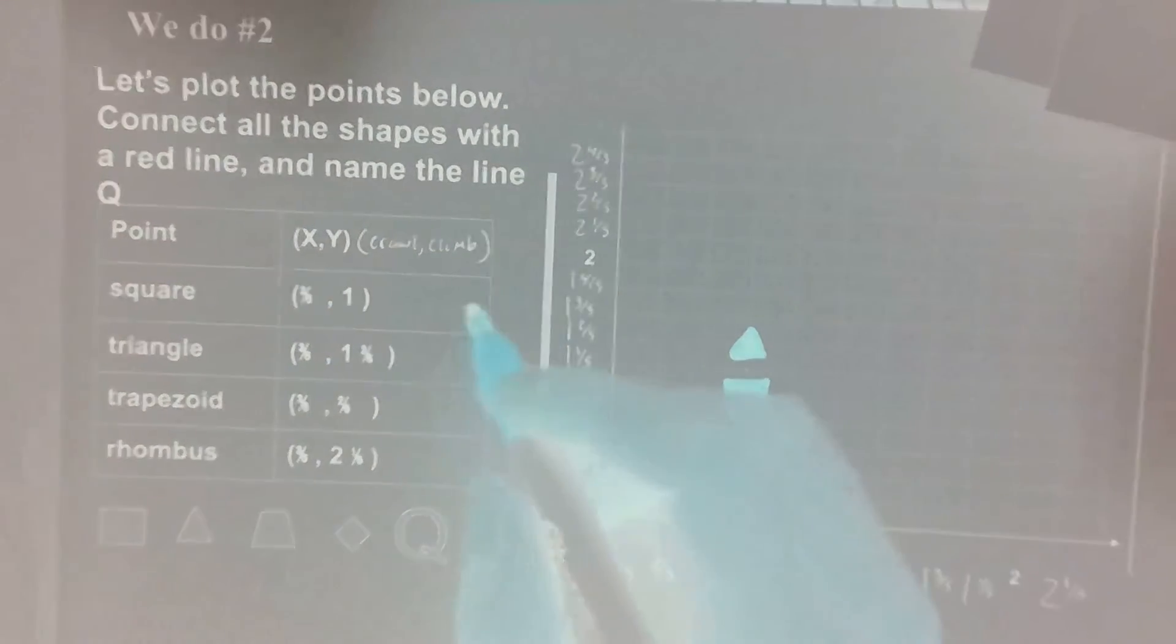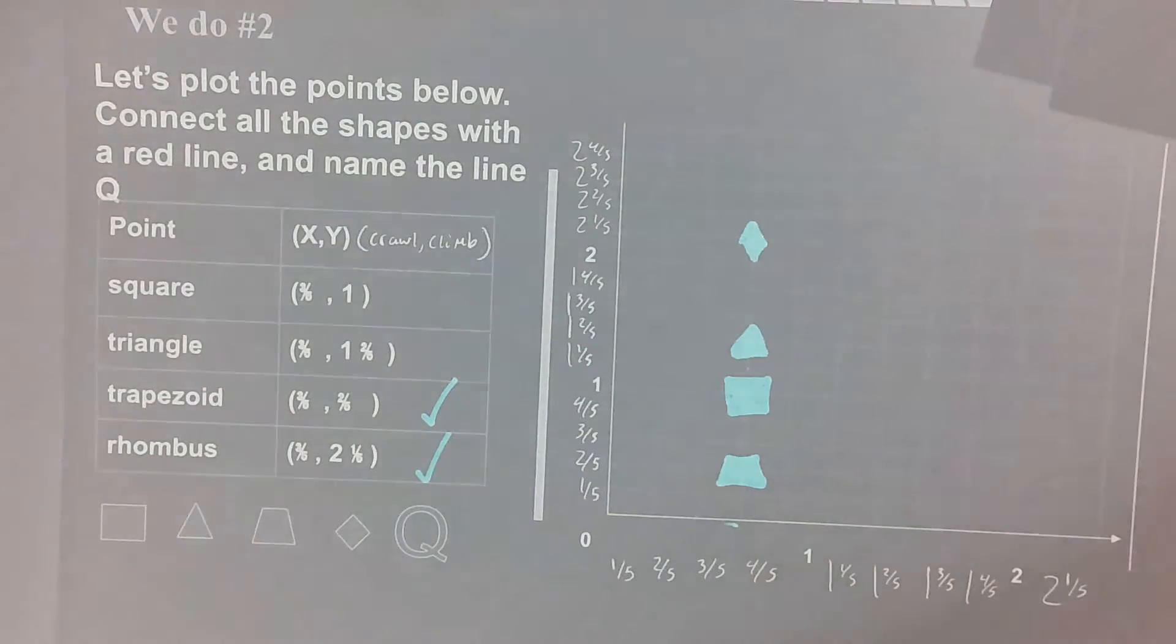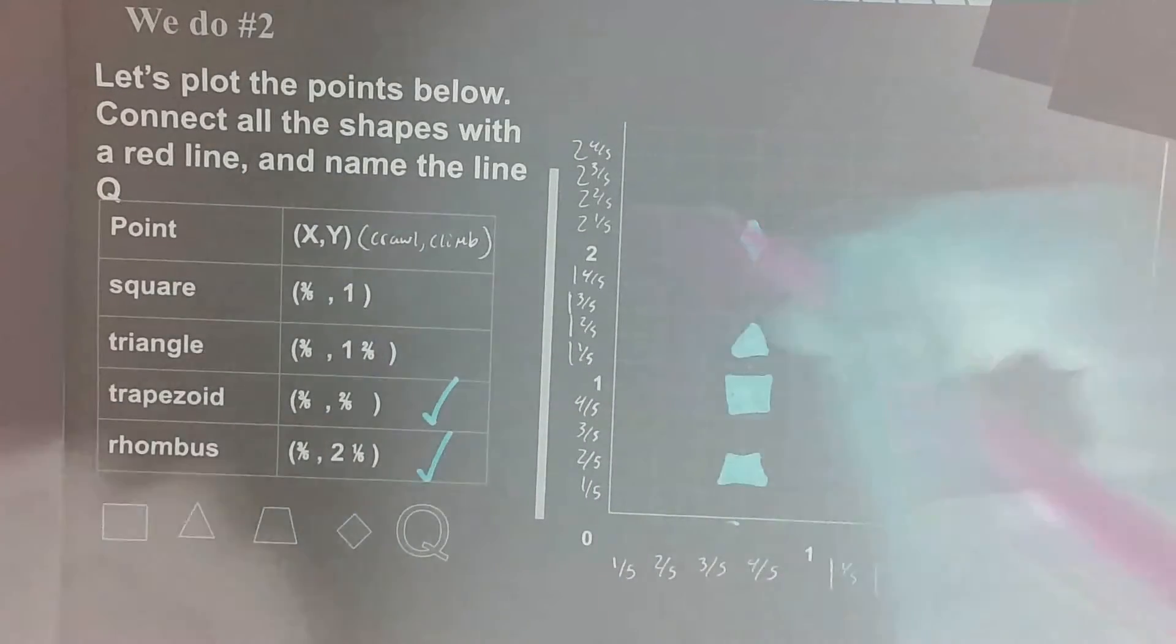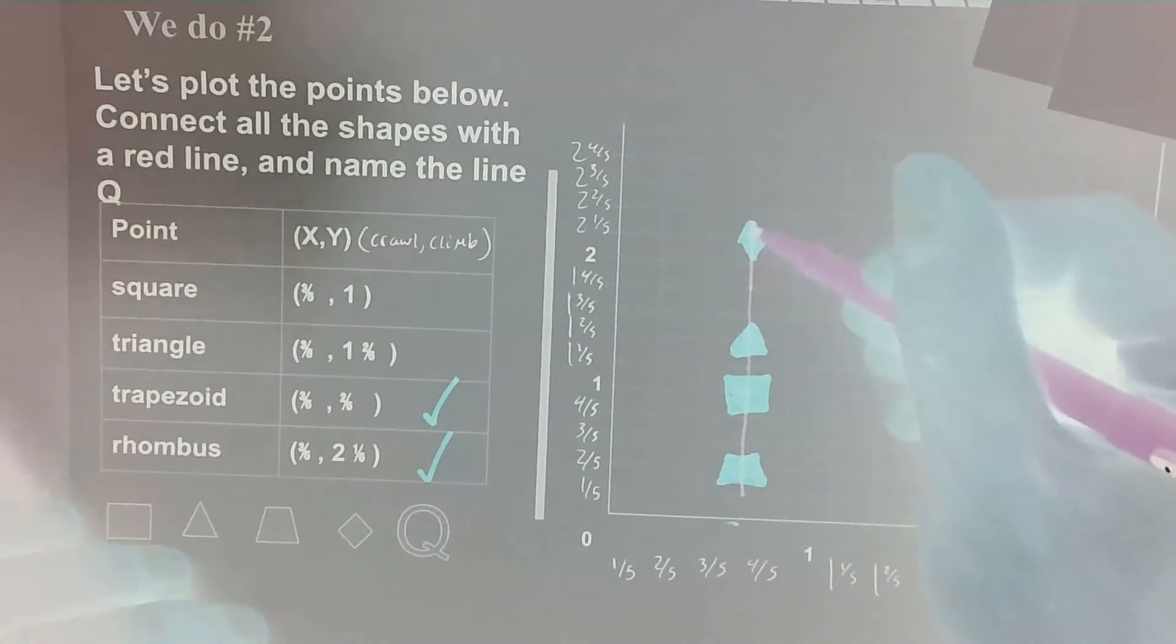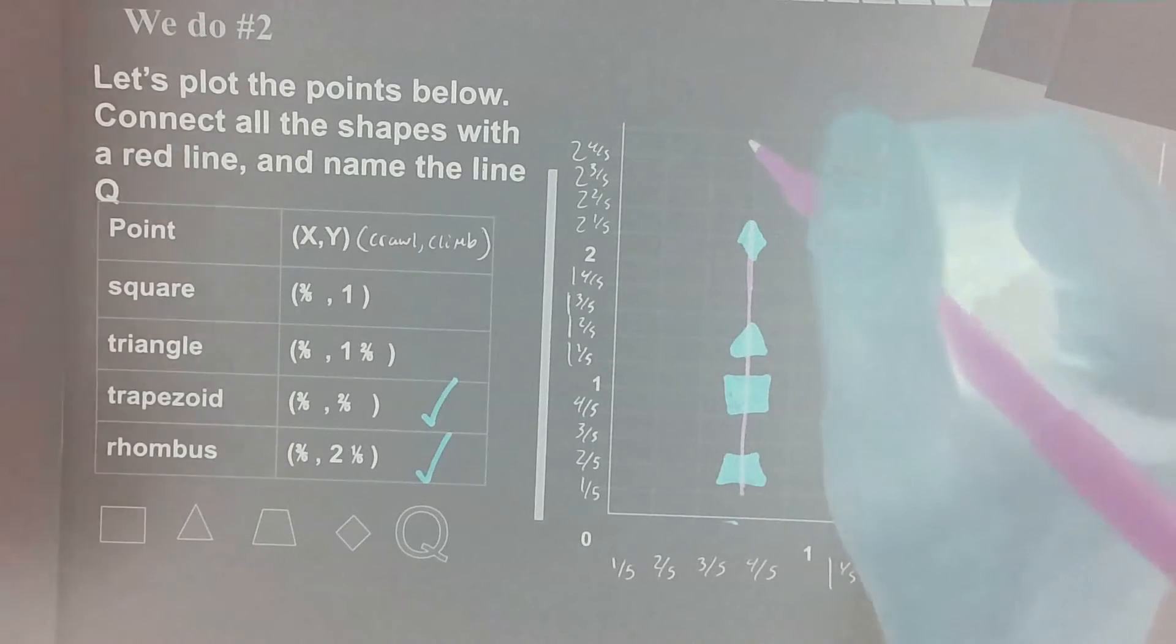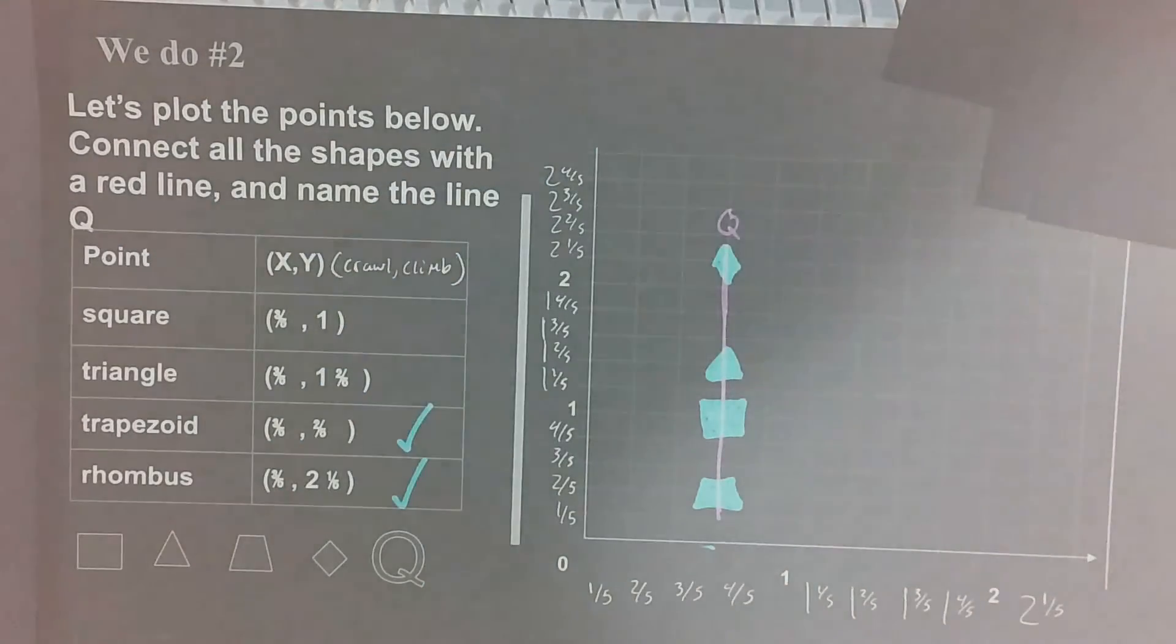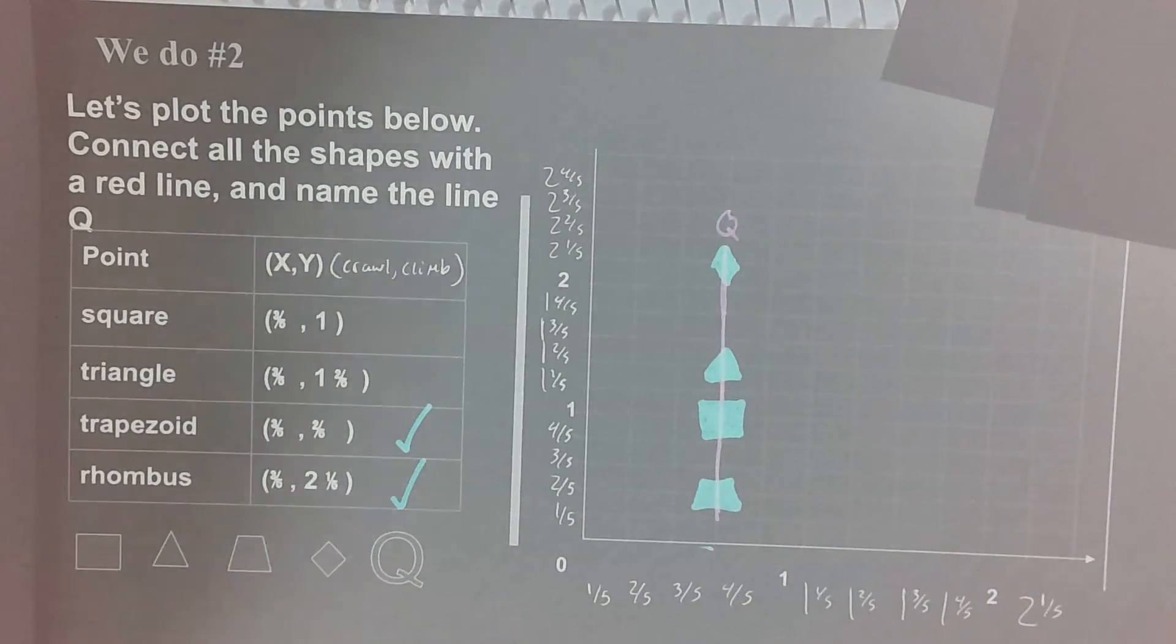Let's pause here and have students independently plot the trapezoid and the rhombus. Once you've plotted those two shapes, you should have four shapes that look like this on your coordinate plane. The next action is to connect all the shapes with a line by either dragging the line on your slides or drawing it on your paper, and we're going to name that line line Q. So drag a line that goes through and touches all of our shapes. All right, like we talked about yesterday, we'll notice this line is parallel with the y-axis and let's label it line Q. Once you have those plots plotted and line Q on your grid, go ahead and insert We do number two into your notes. And then on We do number three, we'll answer some questions about the points in line we just created.